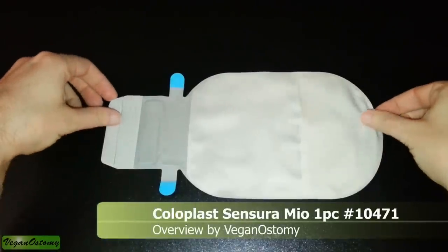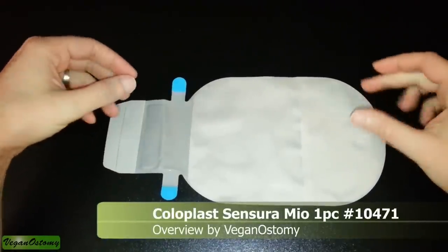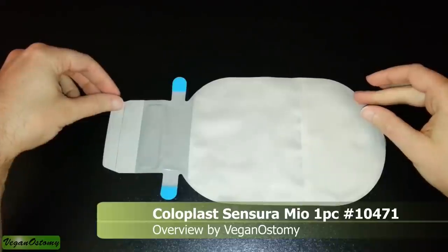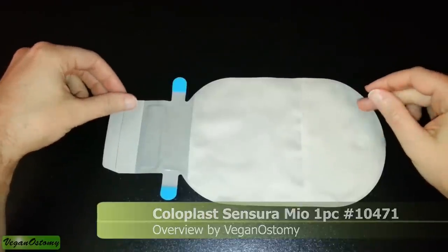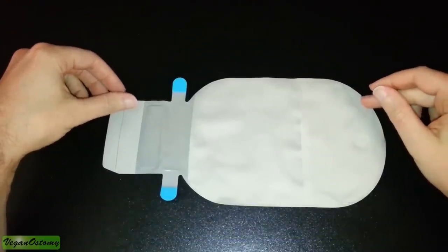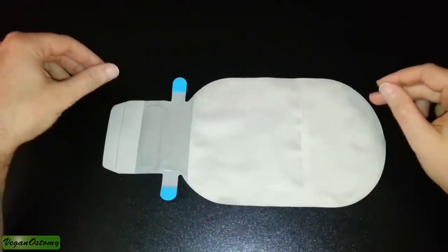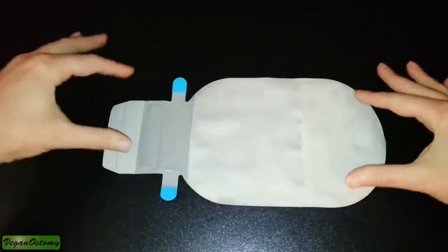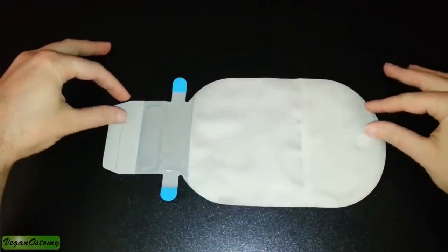Hi guys, I wanted to give a quick overview of the new Coloplast Sensor Mio one-piece pouch. This is item number 10471. One of the things that you'll notice with this pouch is that it has a very different color to it.